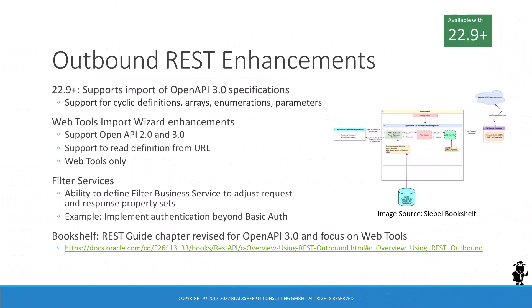Let's take a look at the enhancements for the outbound REST framework. With Siebel CRM 22.9 and higher, developers can not only import OpenAPI 2.0, but also OpenAPI 3.0 specifications for external services. Many of the OpenAPI 3.0 features, such as cyclic definitions, arrays, or enumerations, are supported. The Web Service Wizard in Siebel WebTools now supports direct import of external web service definitions from a URL, as well as the traditional import from a local file.